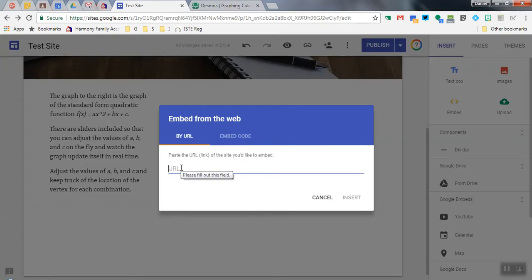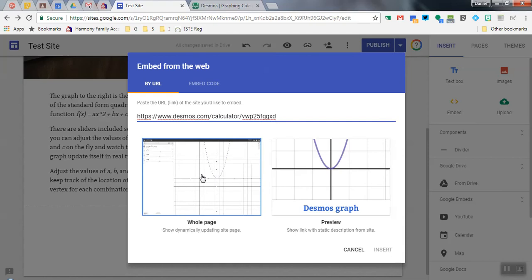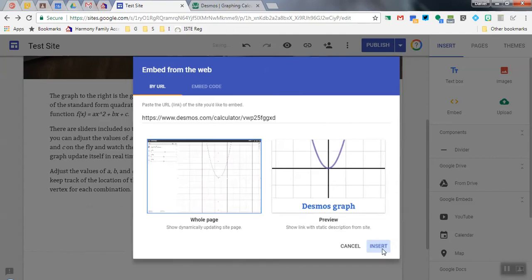I'm only going to embed by URL for this one, so I paste the URL in. I get the whole page option or just a preview. I want to click on whole page, and then I'm going to insert the graph.